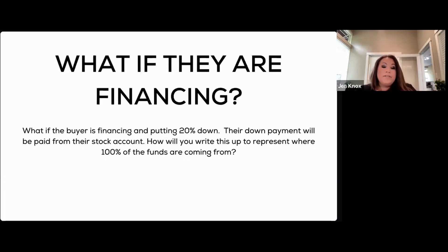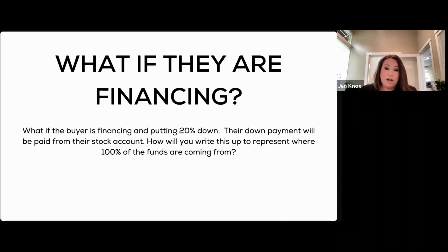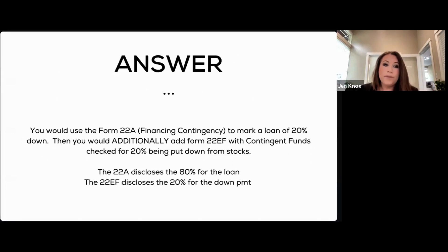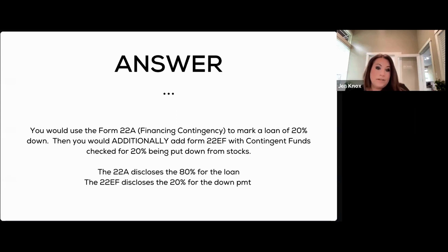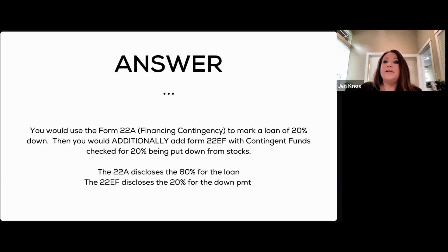What if the buyer is financing and wants to put 20% down, with the down payment coming from a stock account? You would use a financing addendum to mark 20% down, then additionally use the 22EF to show a contingent source for the down payment — noting it's coming from stocks. The 22A would disclose 80% of the purchase price for the loan and the 22EF would show the other 20%, so the entire contract accounts for 100% of the purchase.